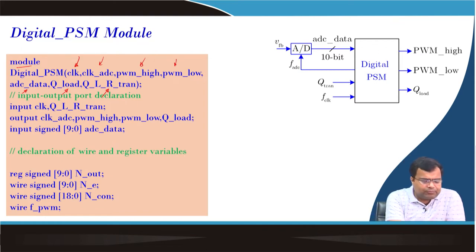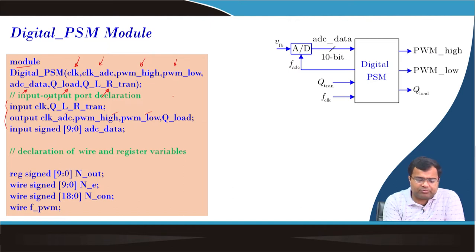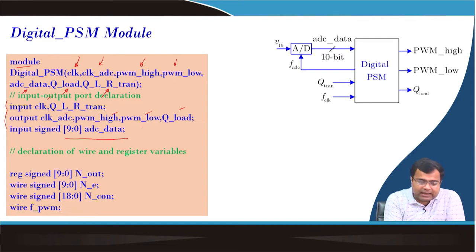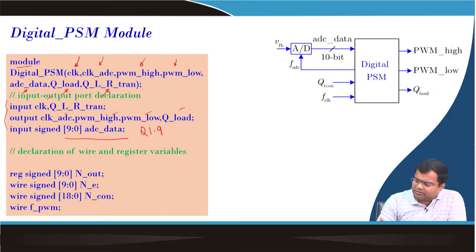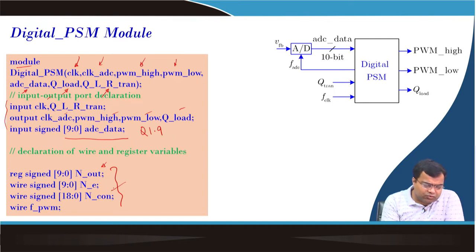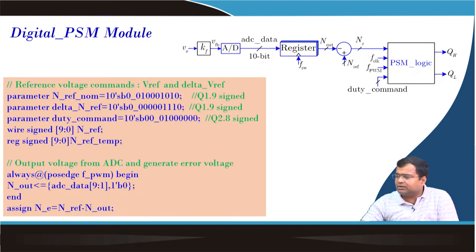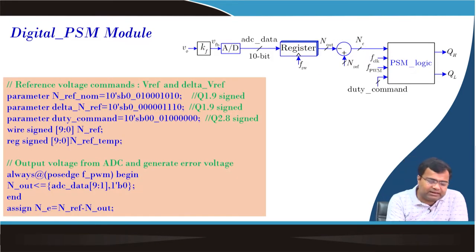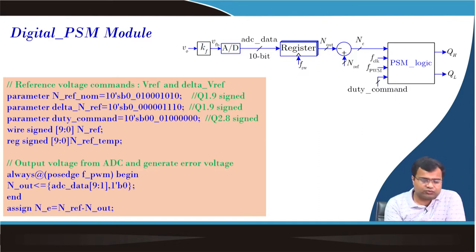Here we have to declare the port - input, output port. So that clock, Q_LR this is the input, ADC clock, PWM high, PWM low, Q_load are the output, and these are signed data coming from the ADC in Q1.9 format in 2's complement. This part we have already discussed - output, control signal, and error. Here we are defining parameters; we can make a reference transient provision, but in this lecture I am not going to show that result.